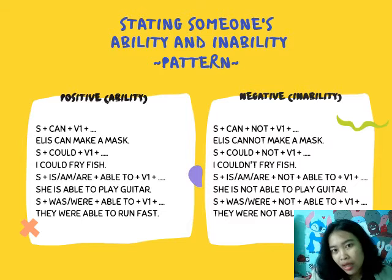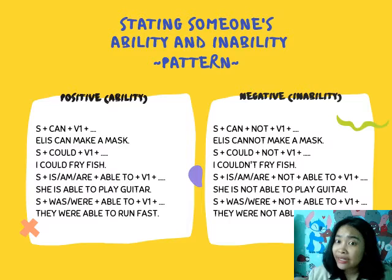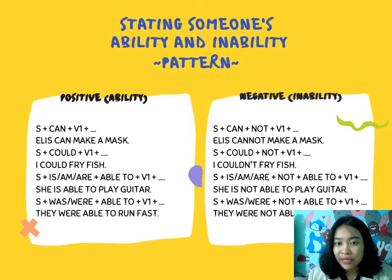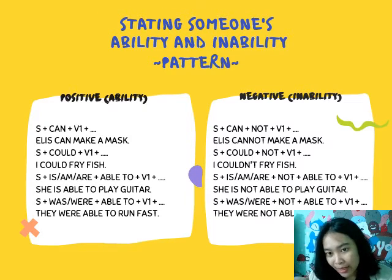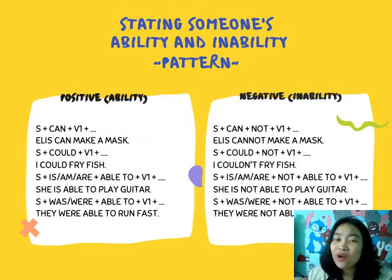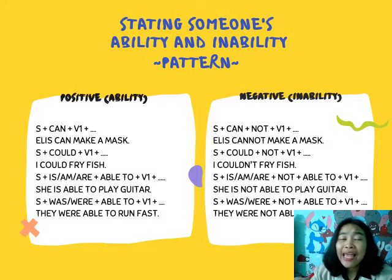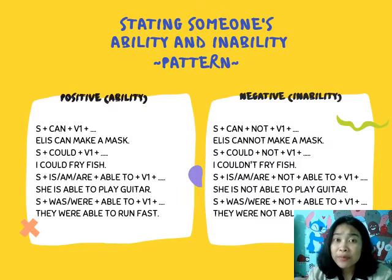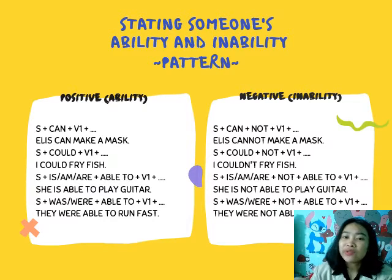Now let's look at the negative or inability patterns. First: subject + cannot + verb 1. Second: subject + could not + verb 1. Third: subject + is/am/are + not + able to + verb 1. And the last: subject + was/were + not + able to + verb 1.